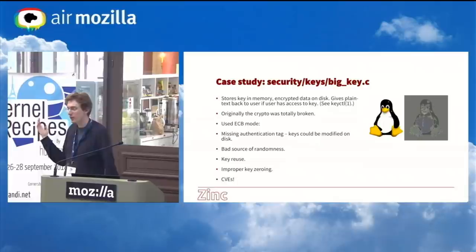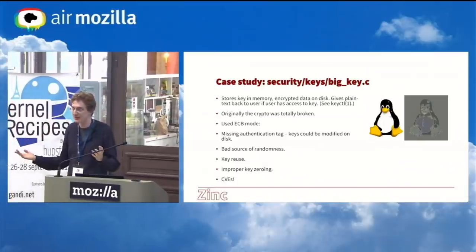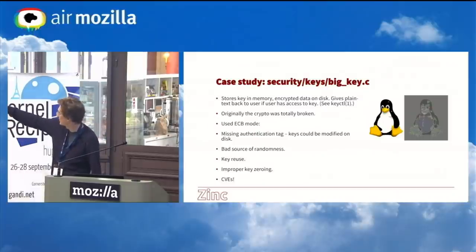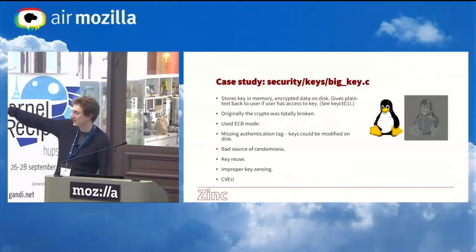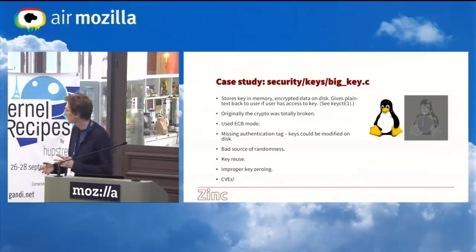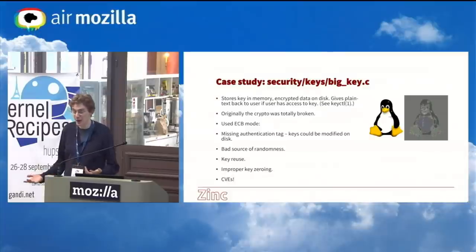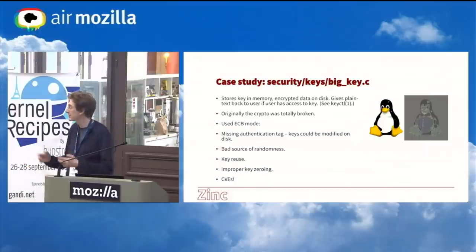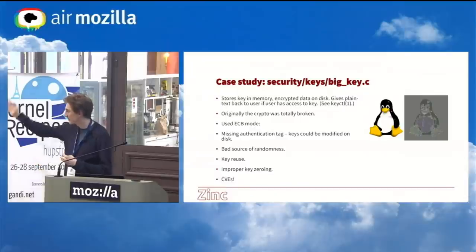I took a look at this a while ago, and the crypto was totally broken. It used ECB mode — if you look at the picture, there's the Linux Penguin, and when you encrypt it with ECB mode you can still see it's a penguin. It was missing an authentication tag, so you could modify the ciphertext to influence the plaintext undetectably. It didn't use a good source of randomness in the correct way. It was reusing the same key over and over, leading to catastrophes. It didn't zero the keys out of memory. There were a lot of CVEs from this.